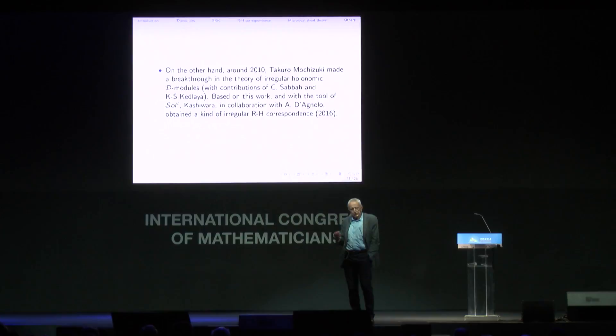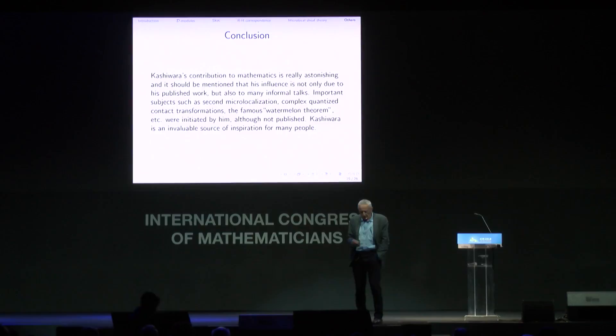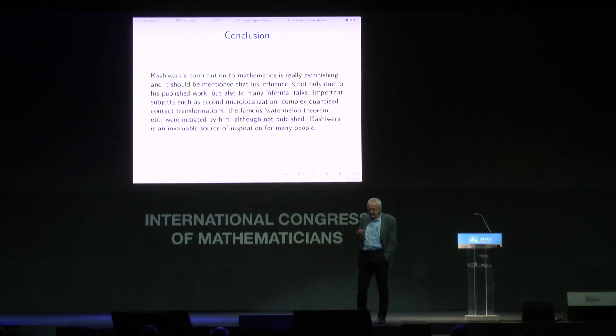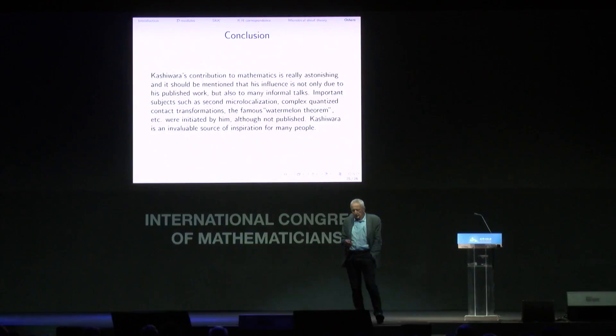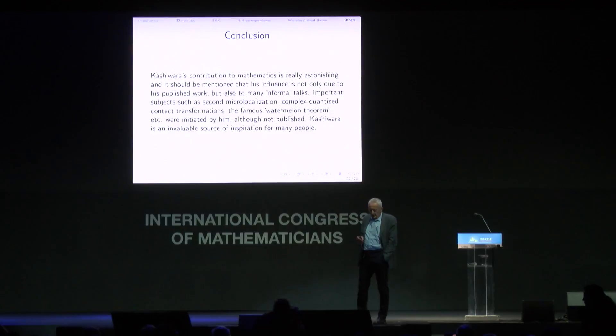Of course, the story is not finished — Kashiwara continues to do a lot of things, but I will describe them in four years, maybe. To conclude, Kashiwara's contribution to mathematics is really astonishing, and it should be mentioned that his influence is not only restricted to his published work. He has interactions with many people, giving ideas. There are subjects where he was the first, which are not known or not published, like second microlocalization, complex quantized contact transformations, and the famous watermelon theorem. Kashiwara is an invaluable source of inspiration for many people. Here is a picture of Masaki Kashiwara. Thank you for your attention.